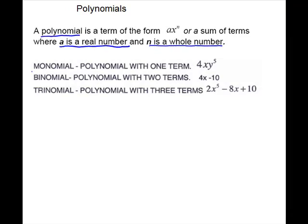We have some special terms for some of the polynomials. A monomial is a polynomial with only one term. Remember the terms are separated by signs. So a binomial is a polynomial with two terms — notice we have a sign in between, so two terms. A trinomial is a polynomial with three terms. All of these can be referred to as a polynomial, and anything longer is also referred to as a polynomial.